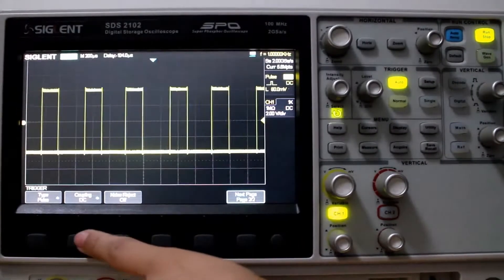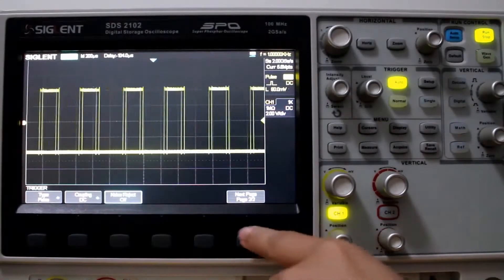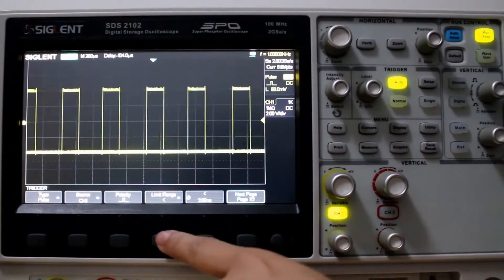Okay, page two, we got DC, the coupling. Noise reject, doesn't make a difference. Okay.